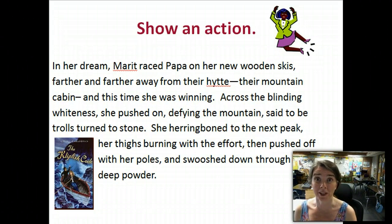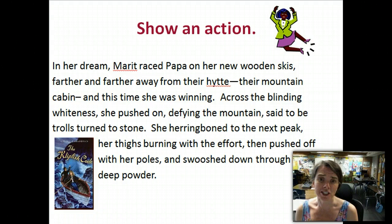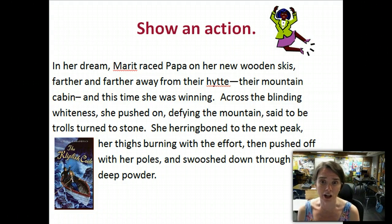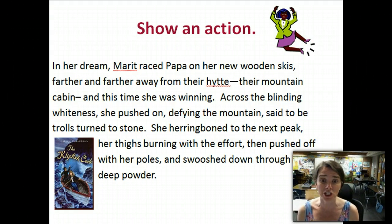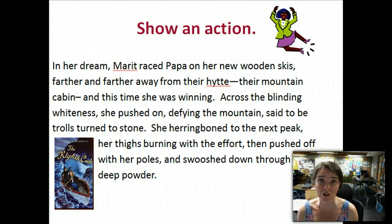The second one is to show an action, and this one is by Mary Casanova — the book is called The Clipfish Code. "In her dream, Marit raced Papa on her new wooden skis, farther and farther away from their hytte — their mountain cabin — and this time she was winning. Across the blinding whiteness she pushed on, defying the mountain said to be trolls turned into stone. She herringboned to the next peak, her thighs burning with the effort, then pushed off with her poles and swooshed down through knee-deep powder." Now that one — I could just picture it in my head as she's racing her dad down the mountain. Couldn't you visualize that one in your head too?